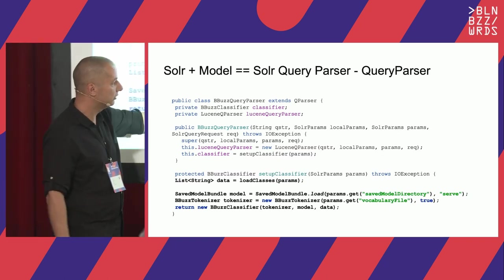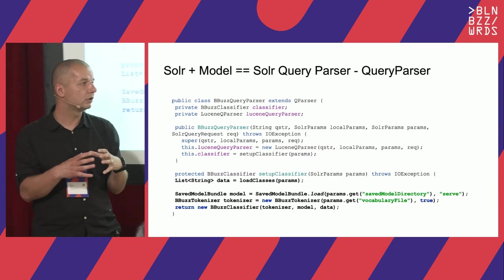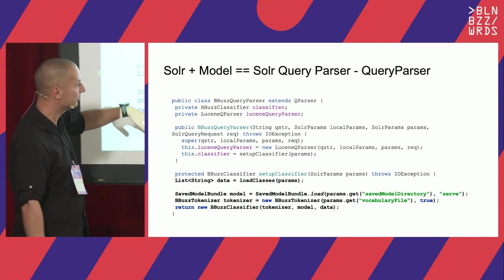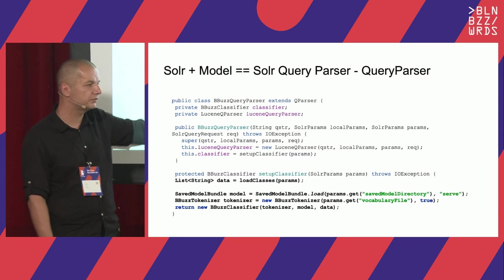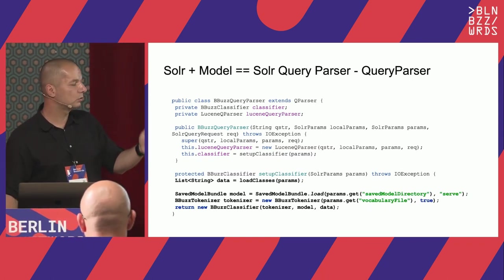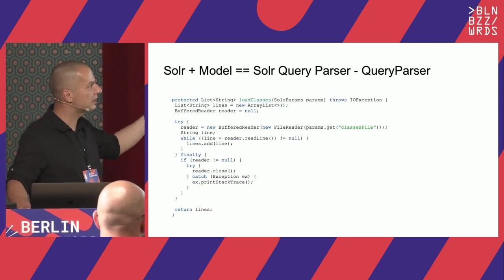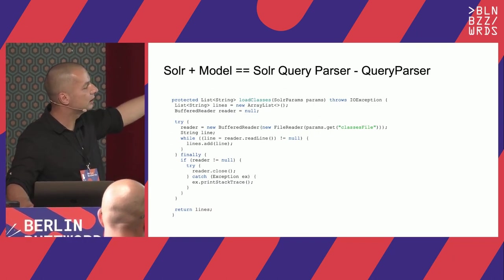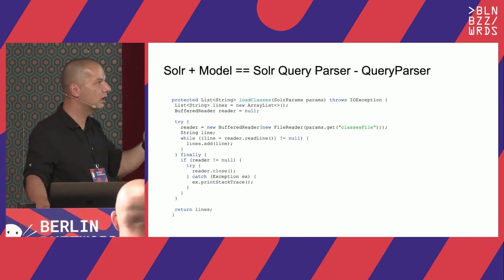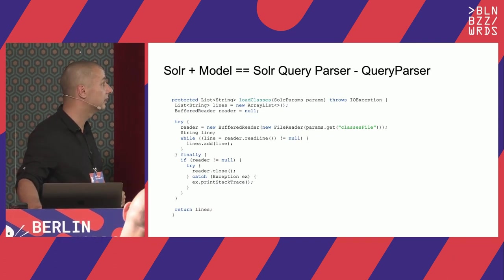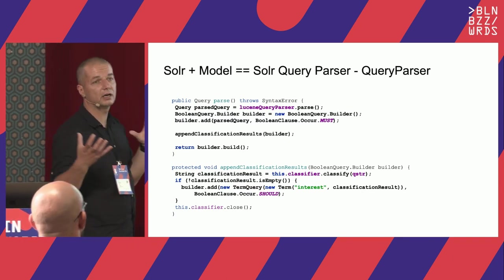The parse method is where everything is combined. We use the Lucene QueryParser to parse the query, take a BooleanQuery, put the Lucene part as a must clause, then append the classification result as a should clause to boost results. We classify the query string, and if the classification is not empty, we add another term query. Memory usage is a concern — larger models use more memory, adding to your JVM heap. The query parser is created with each query, and the model loading latency adds up. There are hacky solutions like static initialization, but you shouldn't do this at home.